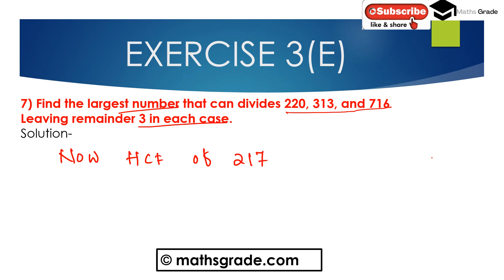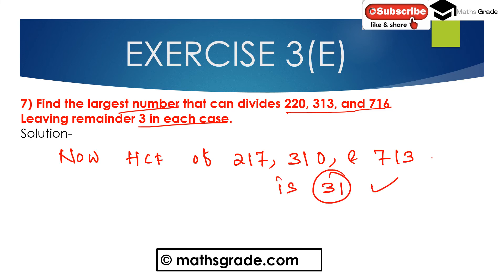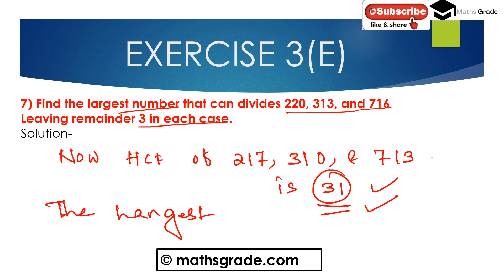So the highest common factor of 217, 310, and 713 is 31. This is the largest number that can divide 220, 313, and 766 leaving remainder 3 in each case. The answer is 31.